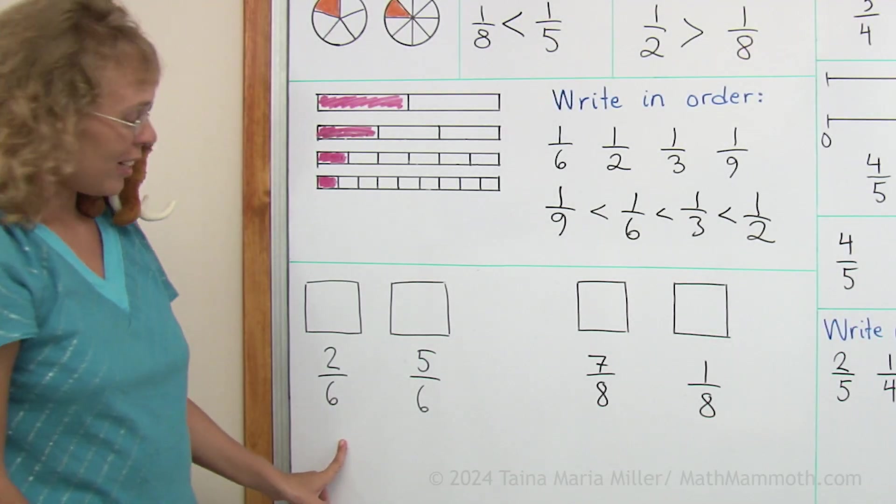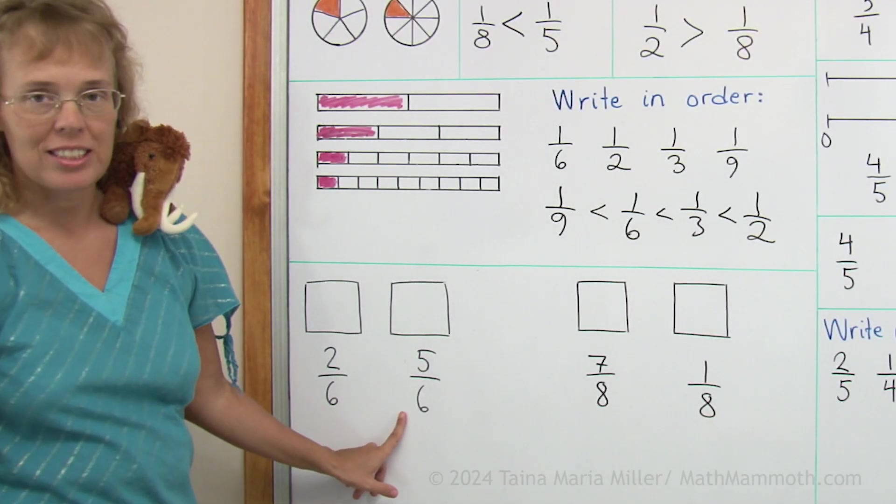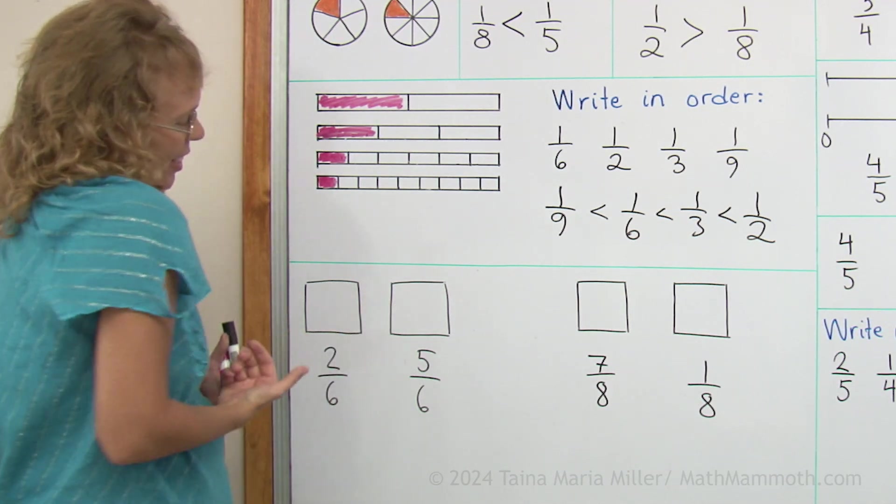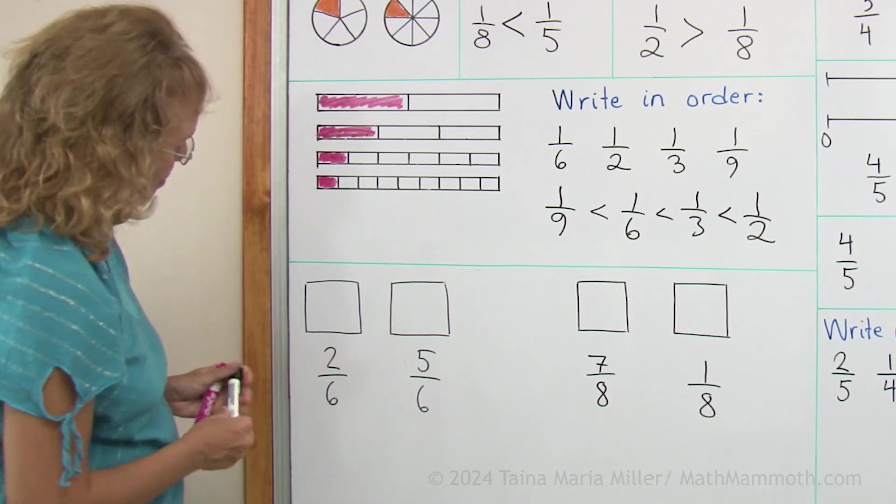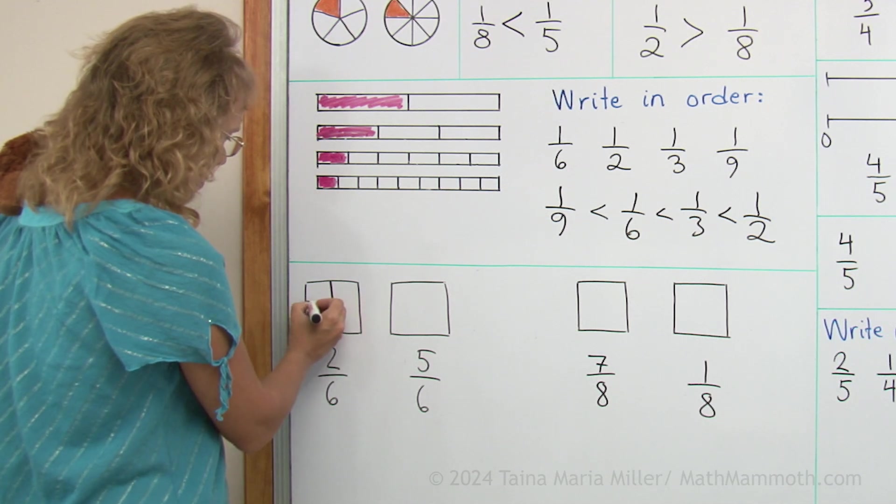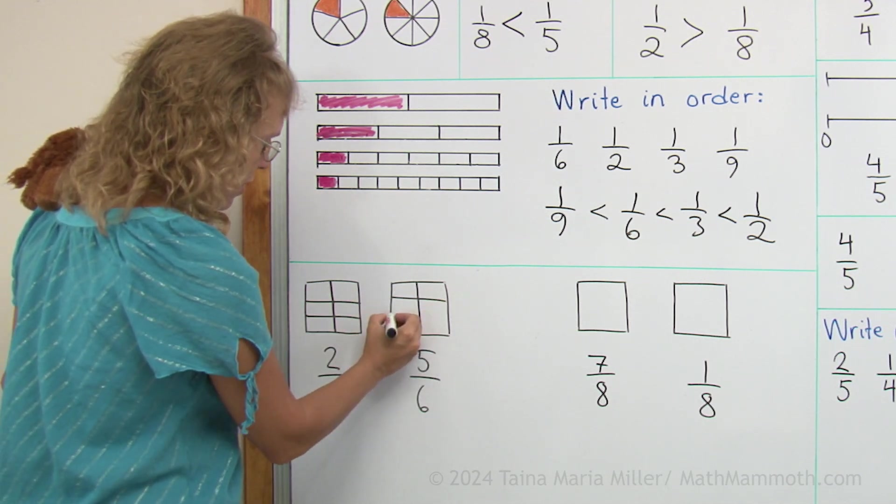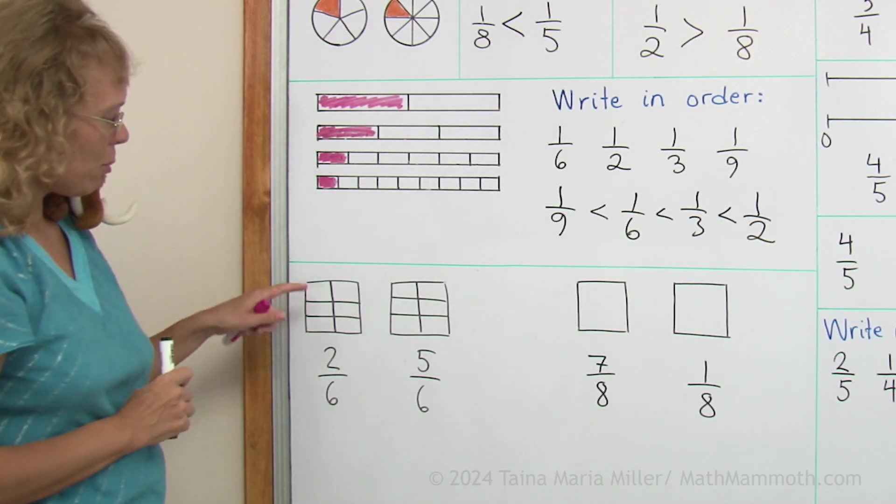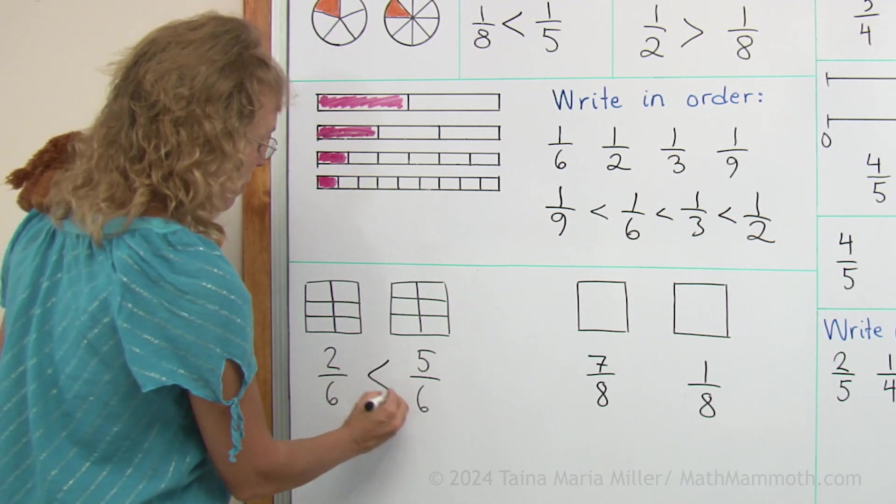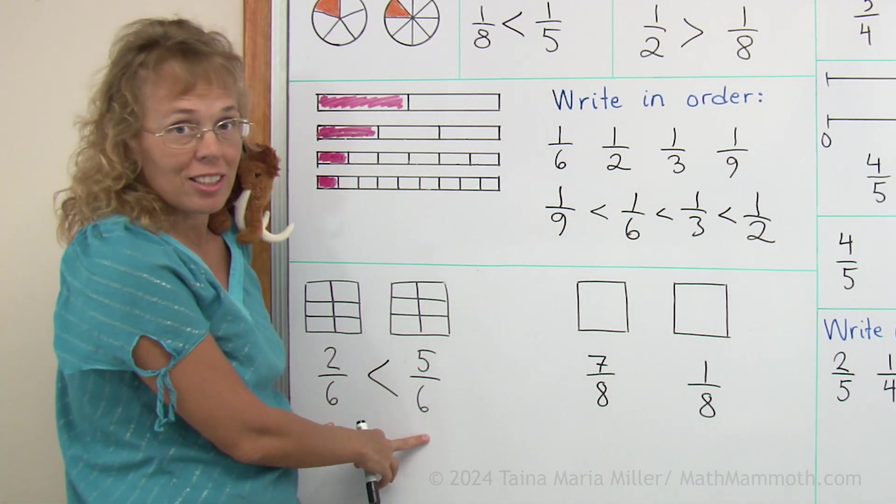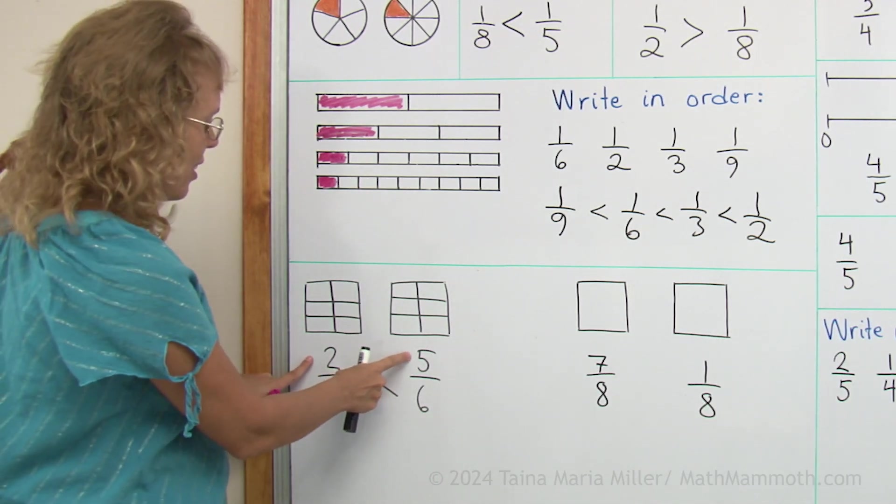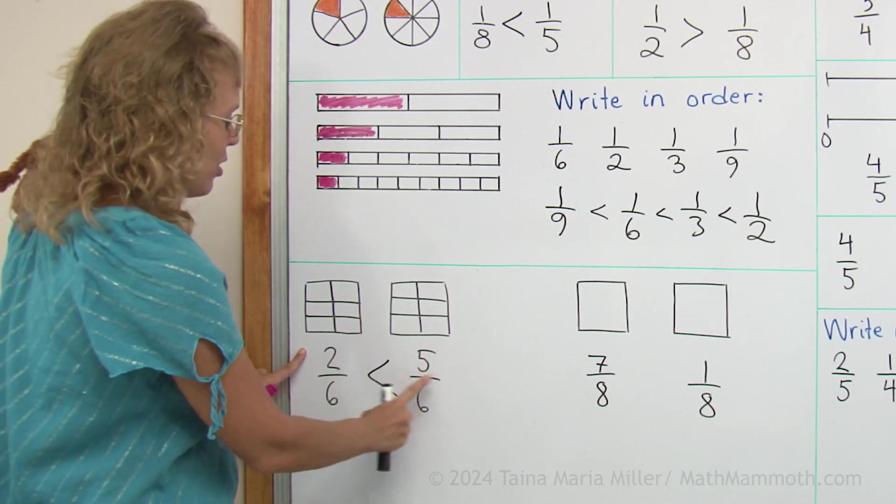Here we're comparing two sixths and five sixths. Which one will be more to eat if these were square pies or something? Let me show you if I divide this into six parts and this one too. If you color two parts here and five parts here, you will easily see that this is of course more. Here we have the same kinds of pieces, sixths and sixths. So you can just check how many pieces there are, two or five. And so five is of course more.